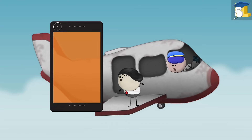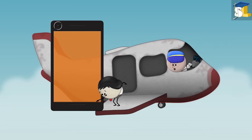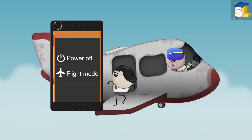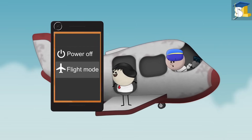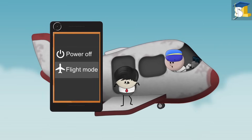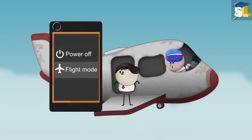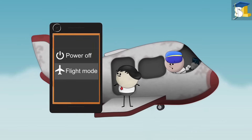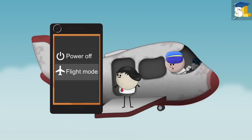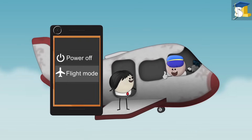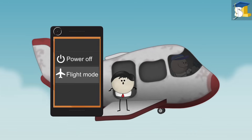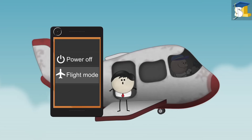Hence, portable electronic devices are told to be either turned off or to be kept on airplane mode or flight mode. This prevents the emission of radio signals, thus helping to keep all the on-board equipment working properly.